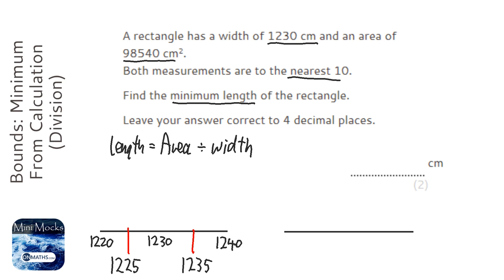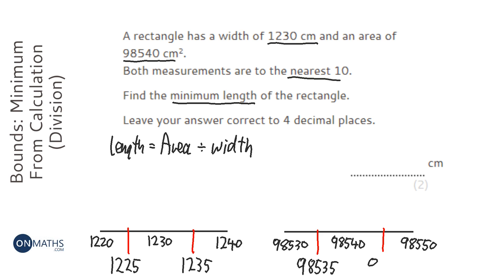It's slightly harder here because it's a much bigger measurement. So it's going to be 98,530 and 98,550, and our halfway marks. So our lower bound here is going to be 98,535 and 98,545.